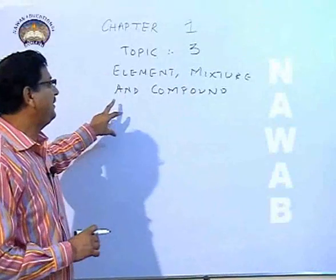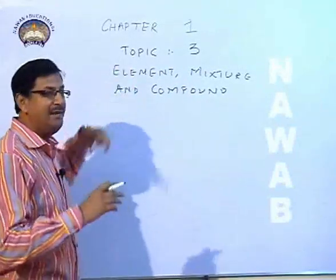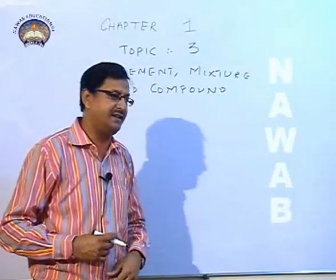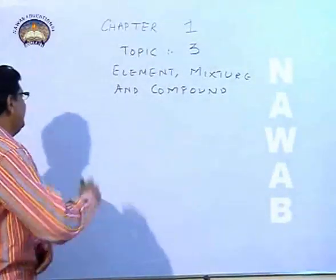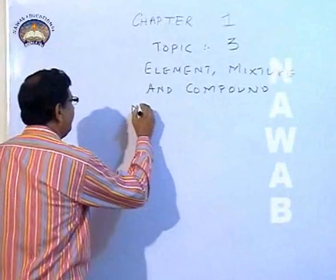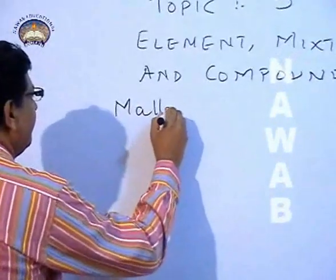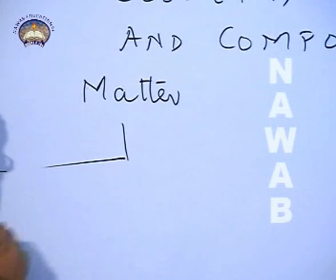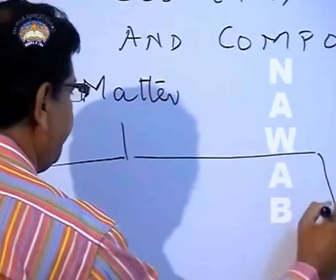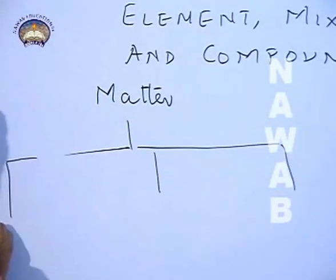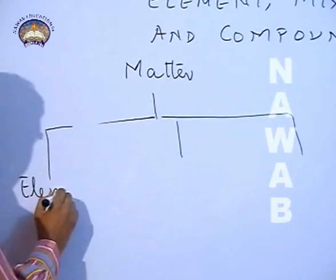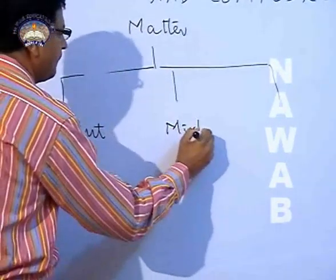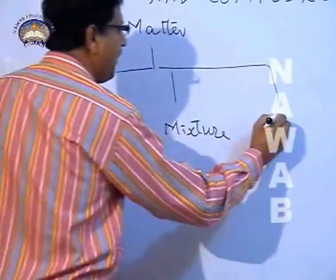In this topic, we will discuss how many types matter chemically exists in. So chemically, matter exists in three types: element, mixture, and compound.